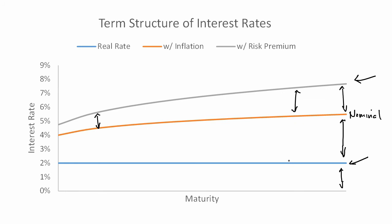To reiterate, the term structure of interest rates is composed of three distinct components. One is the term structure of real rates, plotted here in blue. Then we add inflation expectations, which is the difference between the orange line and the blue line. And then to account for risk, we add a risk premium, which is the gap between the orange line and the gray line. What we observe in the actual data is the gray line, but it's composed of these distinct components.